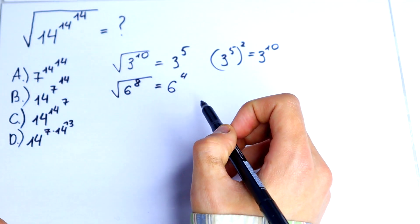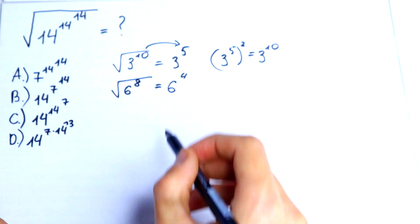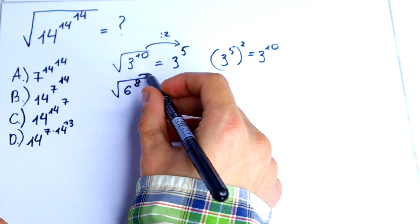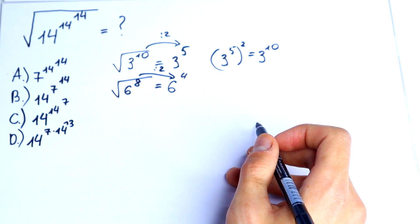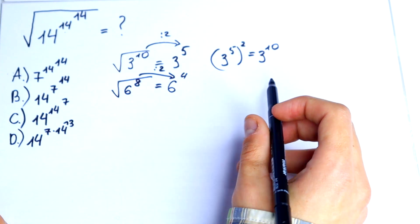So what we can see here is that this square root divides our power by 2. These square roots divide by 2 as well. So the square root divides our power by 2.